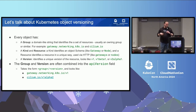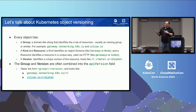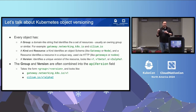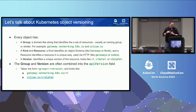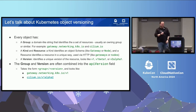Every Kubernetes object has a group — which is like a domain string that identifies a group of API objects — a kind, and a resource. The kind is basically the name of the object. A resource is the path you use to get to the object when doing an HTTP call. A version identifies a specific schema of that resource, and versions look like v1, v1beta1, v1alpha1, v1alpha2, and so on. The group and the version are often combined into the API version field, which is group slash version — for example, gateway.networking.k8s.io/v1 or cilium.io/v1alpha2, which I work on in my day job.